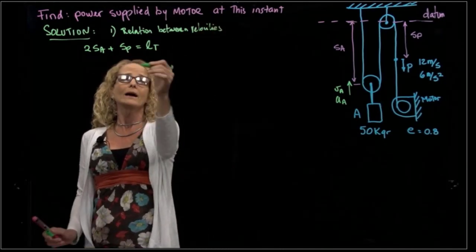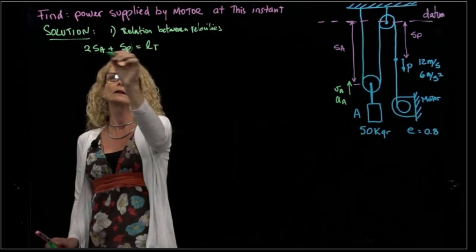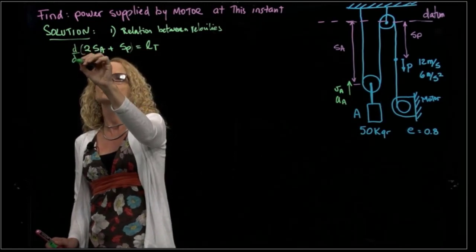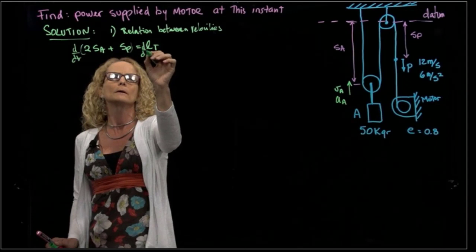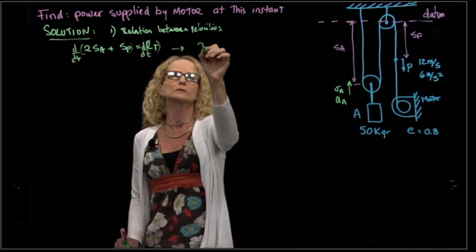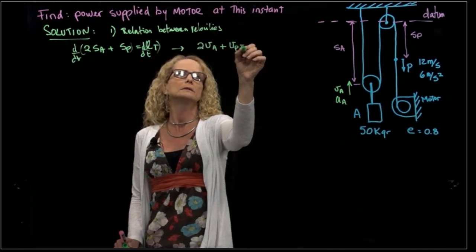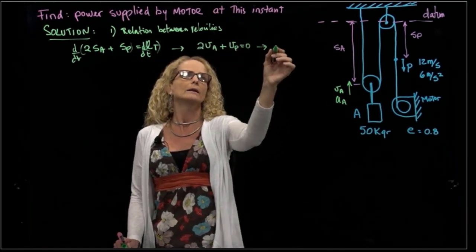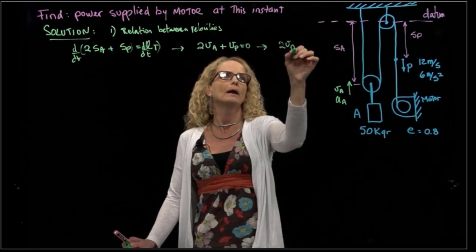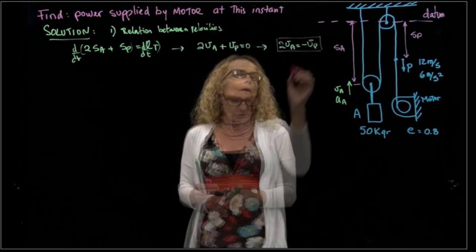Once I have that, I can derive both sides of the equation. If I derive with respect to time, this is a constant, so I get the velocities: 2VA plus VP equals zero. So I get that 2VA equals minus VP. This is my first relation.